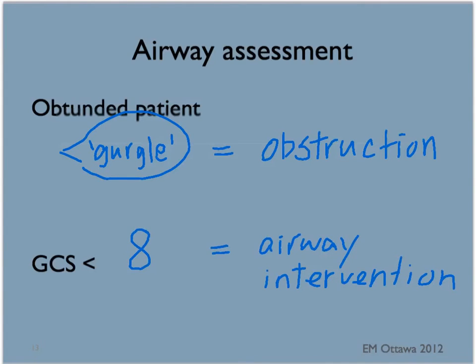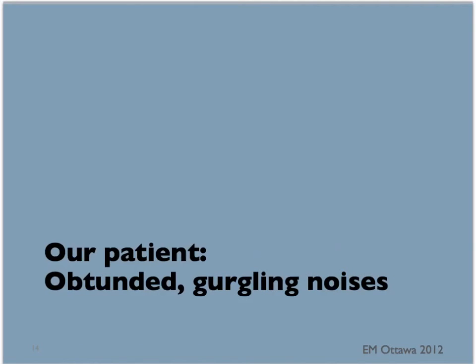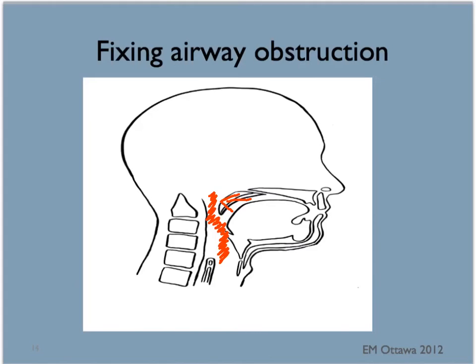Let's go back to our patient. He is making gurgling noises when he breathes; therefore, he has an obstructed airway. How do we fix an airway obstruction? If the airway is obstructed due to blood or vomit, we can use suction to clear out the debris.